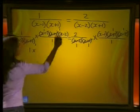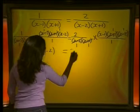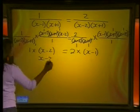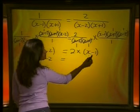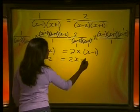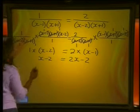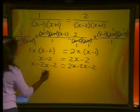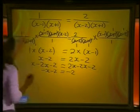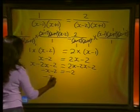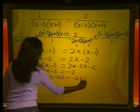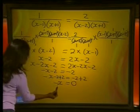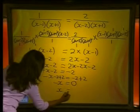Simplifying: x - 2 = 2(x - 1) = 2x - 2. Subtracting 2x from both sides gives -x - 2 = -2. Adding 2 to both sides gives -x = 0. Dividing both sides by -1, we get x = 0.